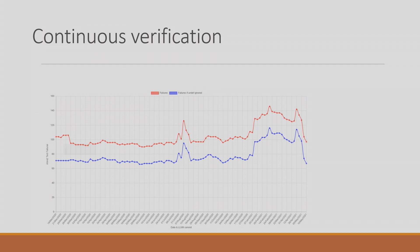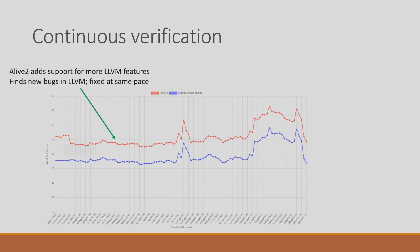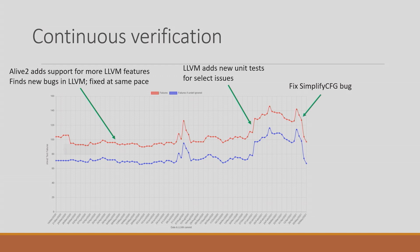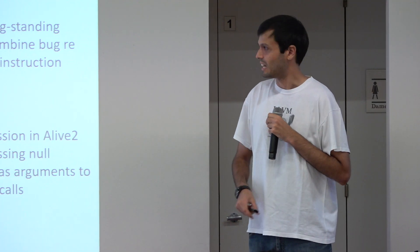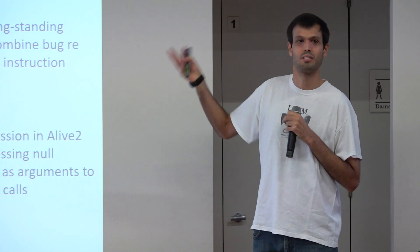We track the number of bugs Alive finds in the unit tests over time. In 2020 we were adding support for new features, reporting bugs, people were fixing them — roughly stable. Then there was a big bump when we added unit tests to expose bugs in the select instruction. Someone fixed that, and you see a big improvement. Alive itself also has bugs — we fixed one here. It's still above zero: we still find around 100 bugs in the LLVM test suite today. But we can track regressions over time, because there are always regressions.